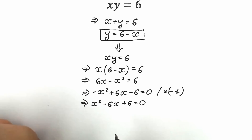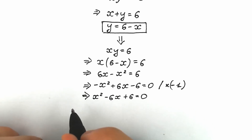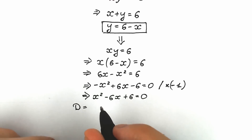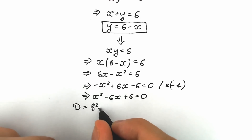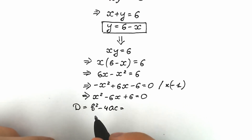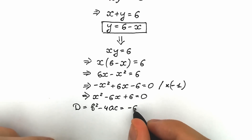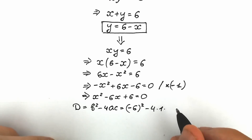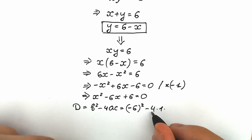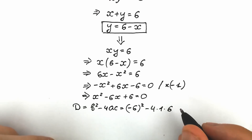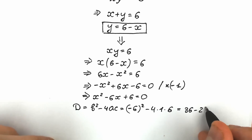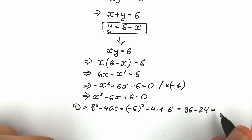As you can see, this is a basic quadratic equation. Let's solve it by finding the discriminant. Maybe we'll have a complex root, but let's see. The discriminant equals b squared minus 4ac. Here b equals minus 6, so b squared equals 36, and 4 times 1 times 6 equals 24. The discriminant equals 36 minus 24, which is 12.